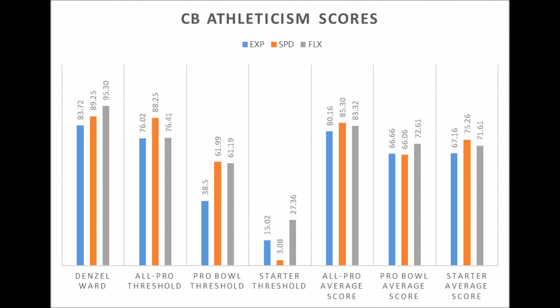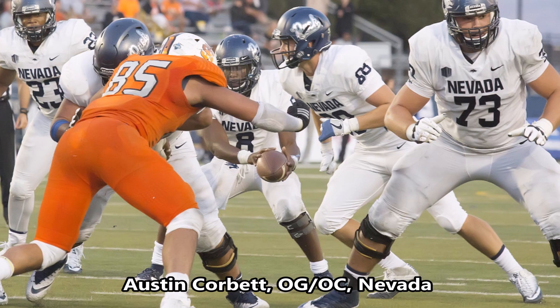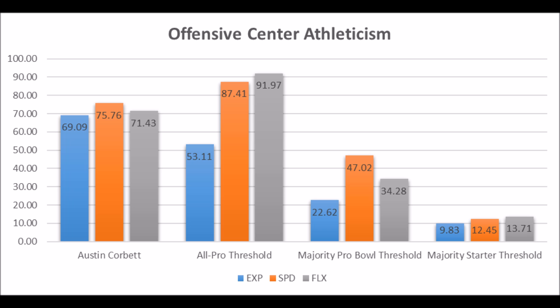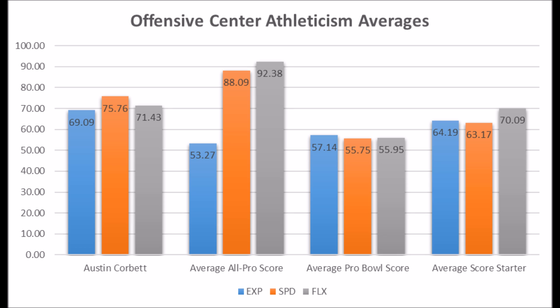Overall Ward is a pretty solid pick, probably a little high for a guy with some production question marks, but has a good chance to be a successful player at the next level. Then we get to Austin Corbett, offensive guard/center out of Nevada. His athleticism testing shows a 69.09 explosive lower body strength score, 75.76 speed score, and 71.43 flexibility score. He doesn't quite look like an all-pro offensive lineman, but does look like a Pro Bowl offensive lineman with above-average athleticism — kind of like a Pro Bowl or two-time starter based on overall testing.